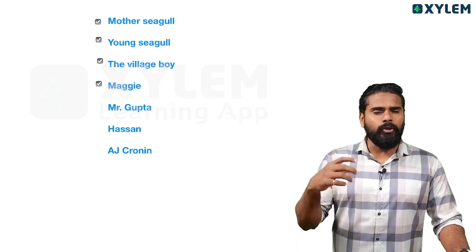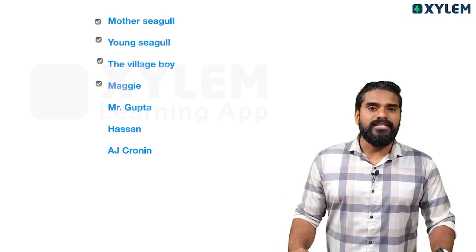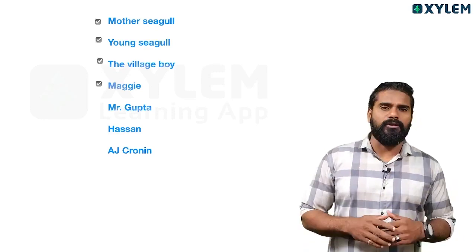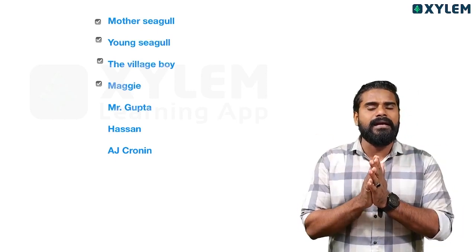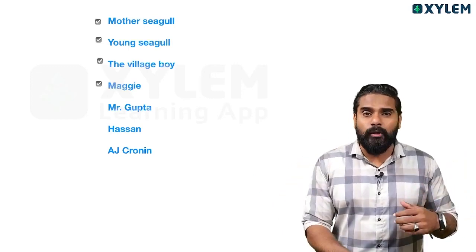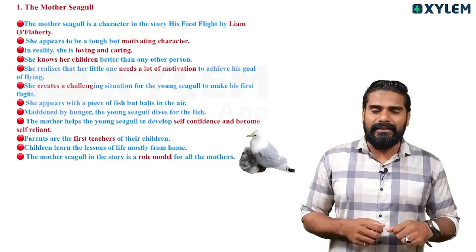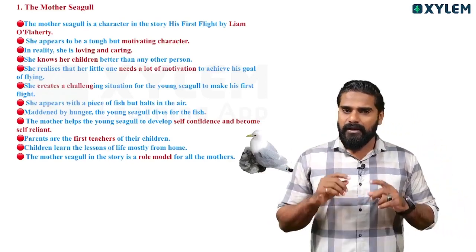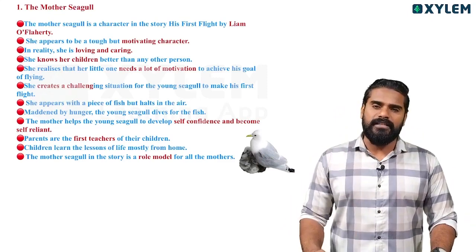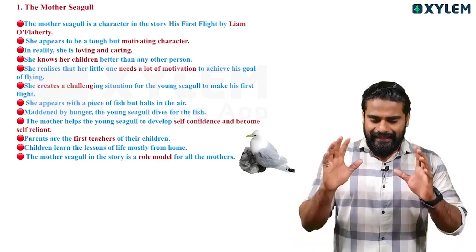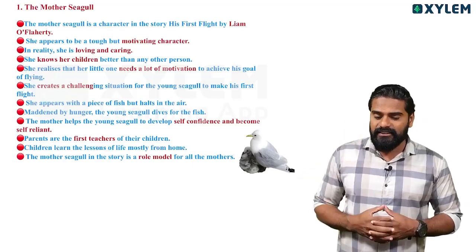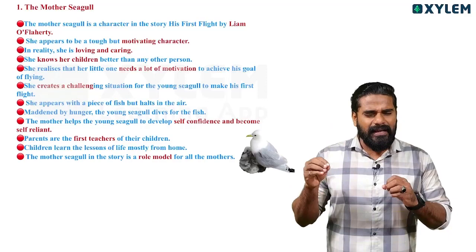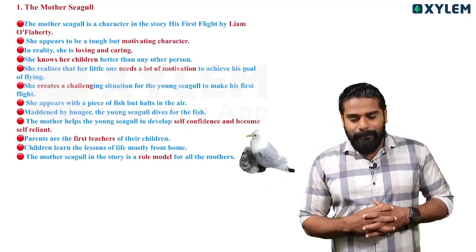Important characters like Gupta are also here. When you study, note down all the characters carefully. Just highlight the key sentences in the text — if the author has changed a character's color or given a clue, highlight it so that in your mind you can catch those points. Now let us begin. First, Mother Seagull — the character in the story 'His First Flight' by Liam O'Flaherty.